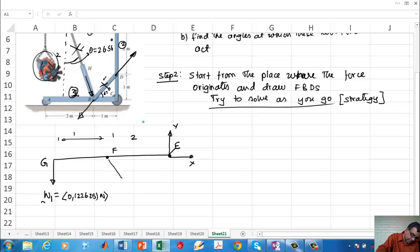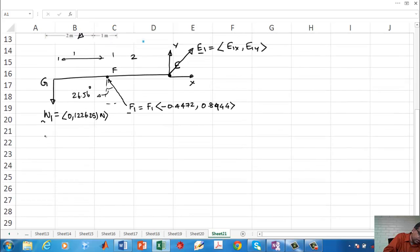This is rigid body number one, that is rigid body number two, that is rigid body number three. I am going to draw W1, and the weight is 1226.25 newtons. F acts at an angle theta equals 26.56 degrees. F1 equals some unknown magnitude. The Y component is positive, X component is negative. At point E, I am going to call it E1 equals E1X, E1Y.